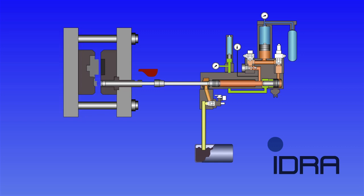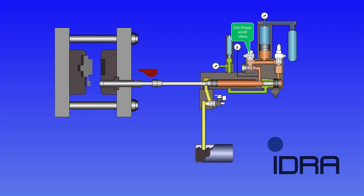As the intensification piston starts to move, the large check valve mounted under the second phase on-off valve is closed by the spring and back pressure from the injection cylinder pressure.